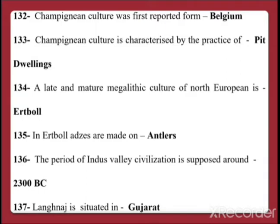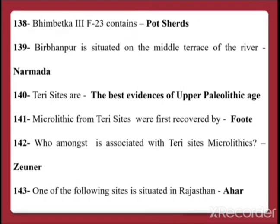Question 137: Langhnaj is situated in Gujarat — it is a Mesolithic site located in Gujarat. Question 138: Bhimbetka's third chamber F23 contains pot sherds. Pot sherds are broken pieces of ceramic materials — the broken pieces of clay utensils that archaeologists have named pot sherds. Question 139: Birbhanpur is situated on the middle terrace of the river Narmada.